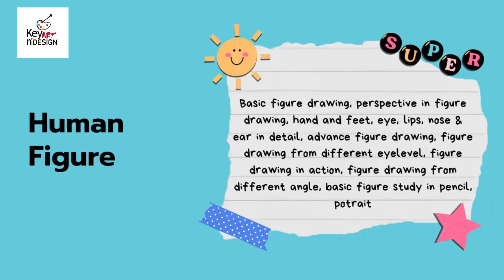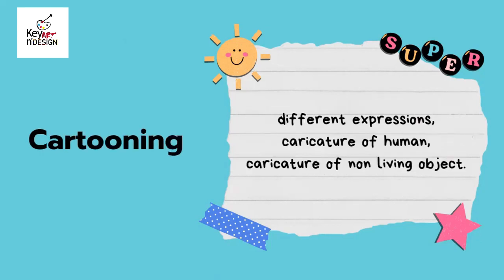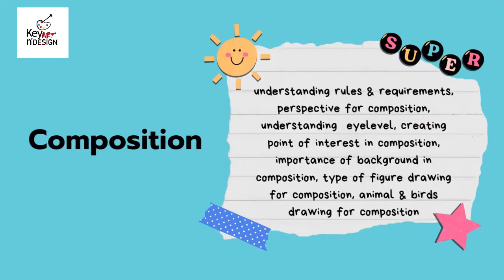Still life study covers geometrical shapes, objects, and drapery. Cross section and bisection view covers fruits, vegetables, and non-living objects. Human figure drawing includes basic figure drawing, perspective in figure drawing, hand and feet, and eye, lips, nose, and ear in detail. Advanced figure drawing covers figure drawing from different eye levels, in action, and from different angles.